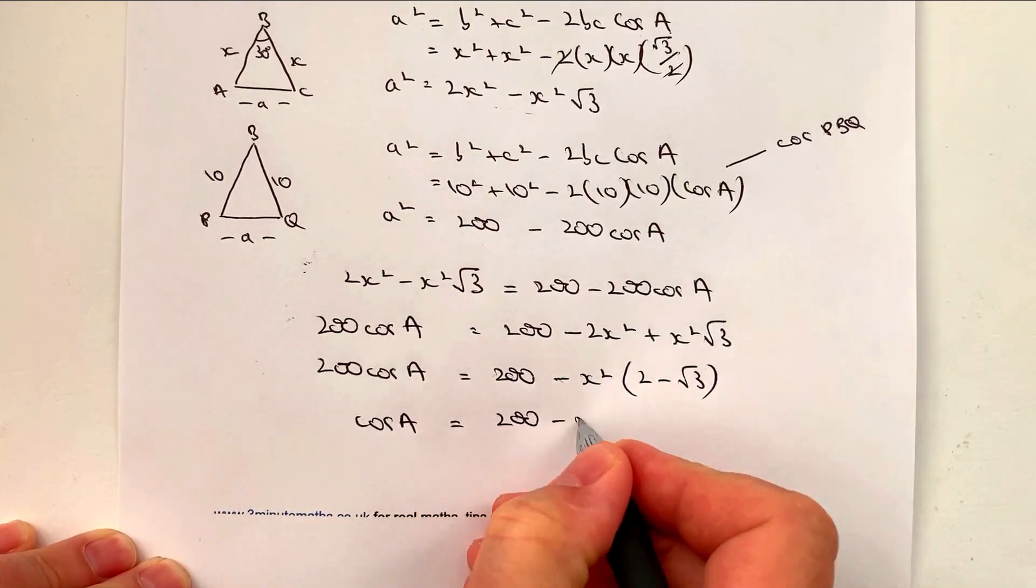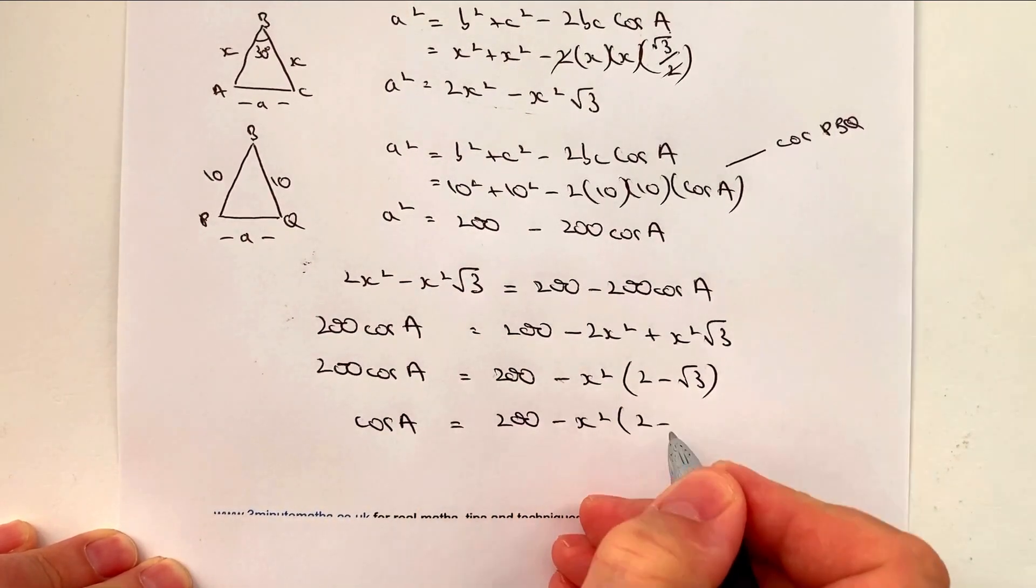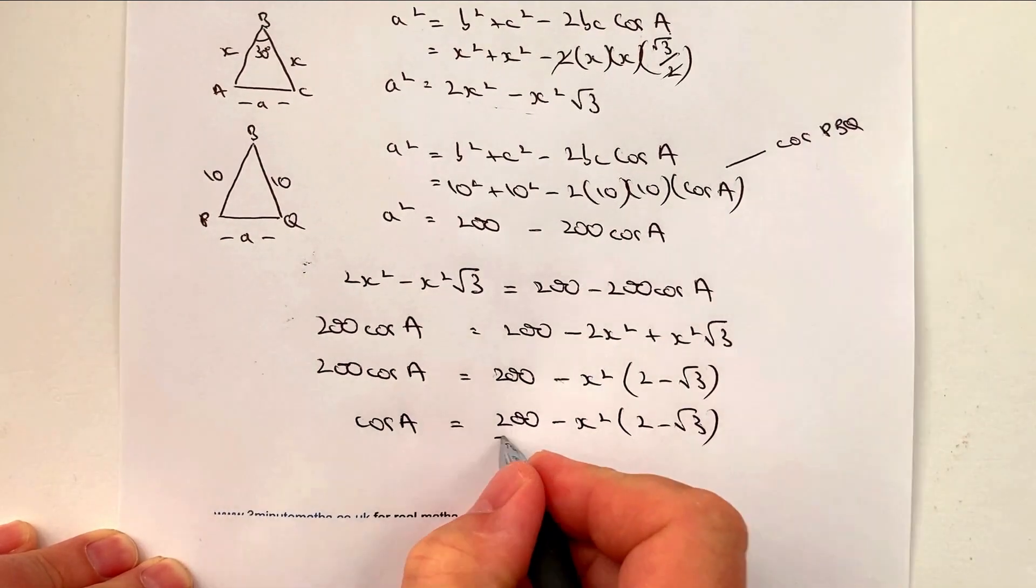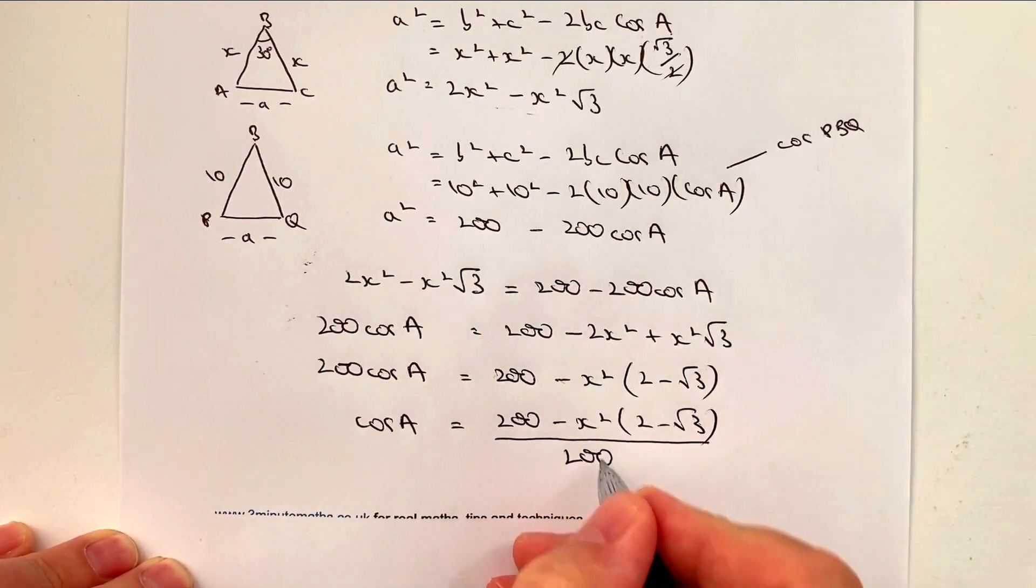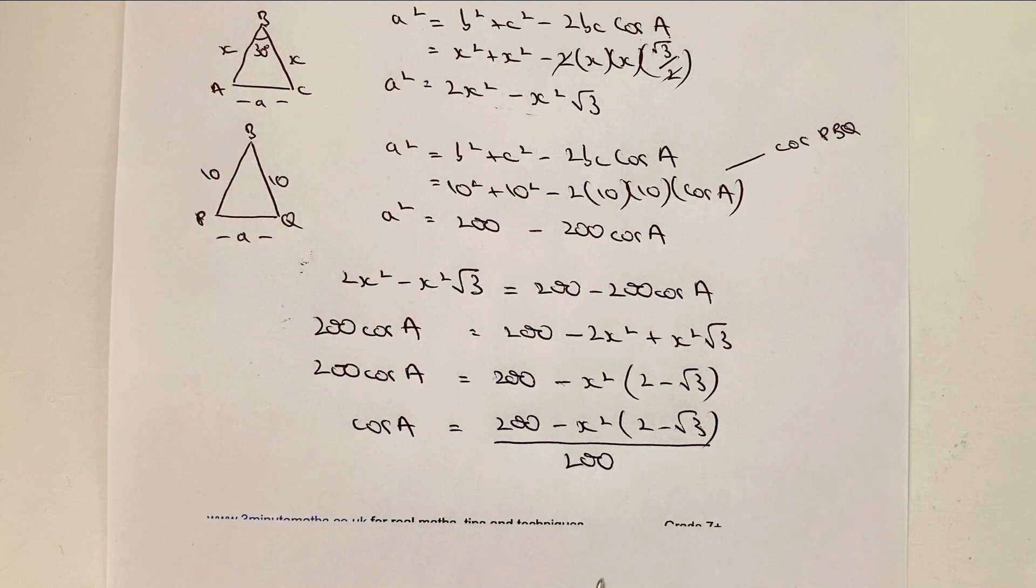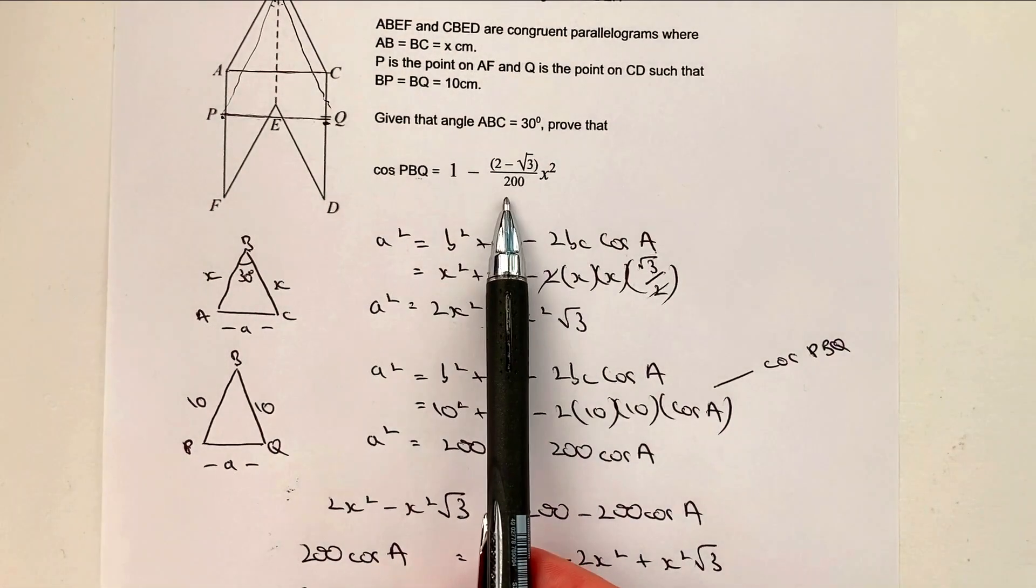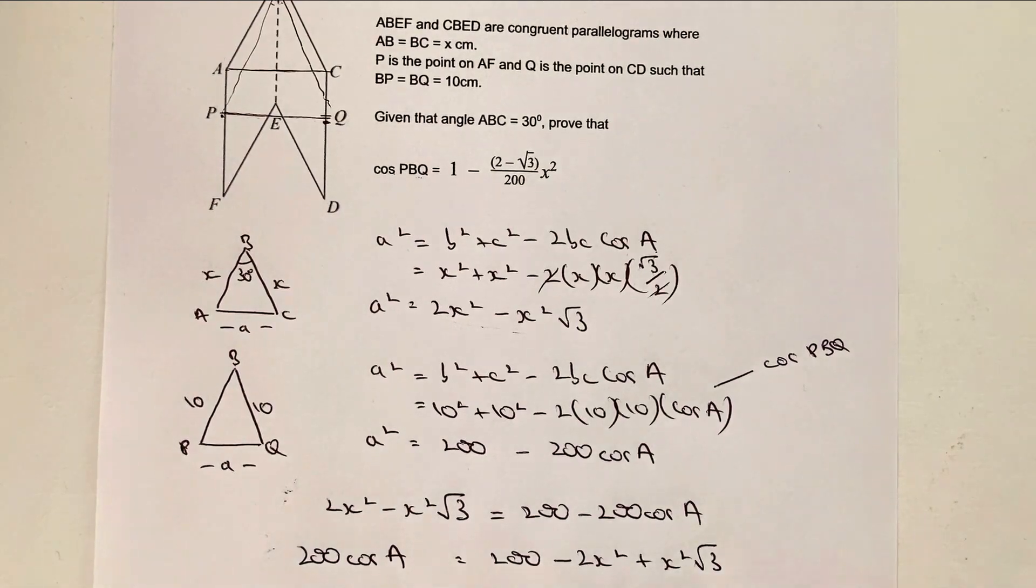I get 200 minus x squared 2 minus root 3, all divided by 200. And then really just tidying this up until it looks like my original. So what I'm going to do is I'm going to turn over and go to the other side of the sheet. And I'll actually rewrite that particular formula again.